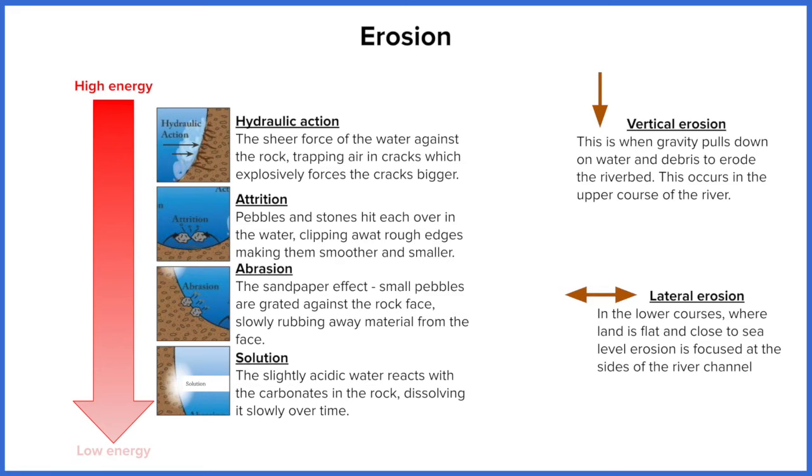So you can see on the slide now that we've got four types of erosion. Hydraulic action is at the top and that requires the most energy to take place. Hydraulic action is that force of water hitting against the side of the riverbed or the cliff, forcing air into tiny cracks. The air has nowhere to go so it happens in sort of an explosion and pushes and makes those cracks bigger.